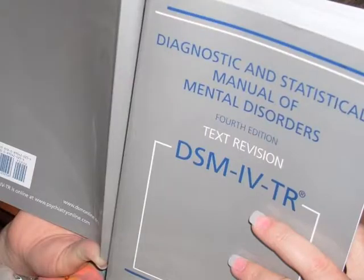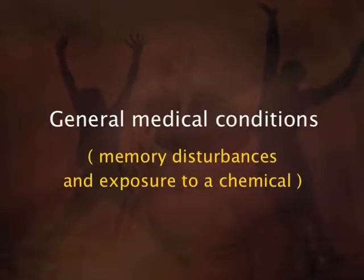Let us first have an overview of what amnestic disorders are. Amnestic disorders are a group of disorders which involve loss of memories which have been previously established, loss of ability to create new memories, or loss of ability to learn new information. DSM-4 TR defines amnestic disorders as resulting from two basic causes: general medical conditions which produce memory disturbances, and exposure to a chemical which can be a drug of abuse, medication, or environmental toxin. An amnestic disorder whose cause cannot be definitely established may be given the diagnosis of amnestic disorder not otherwise specified.